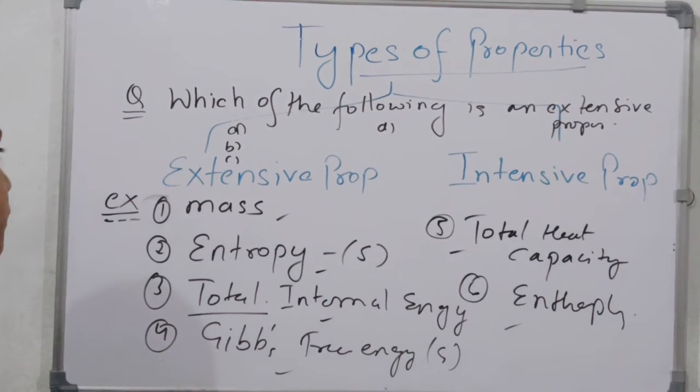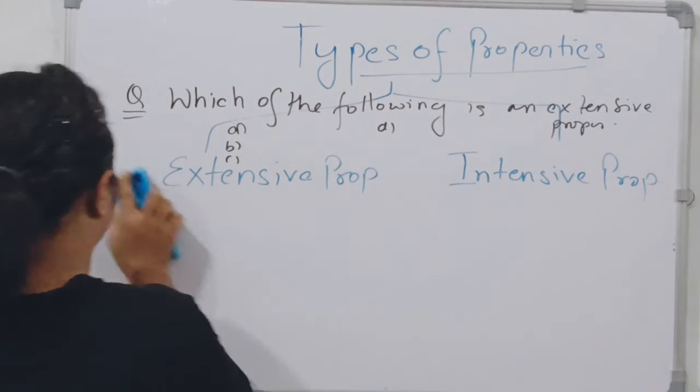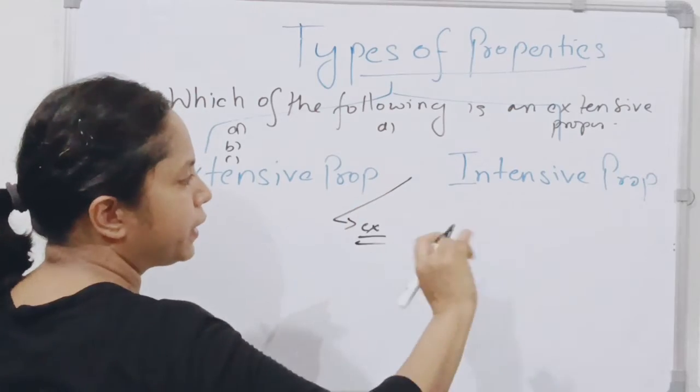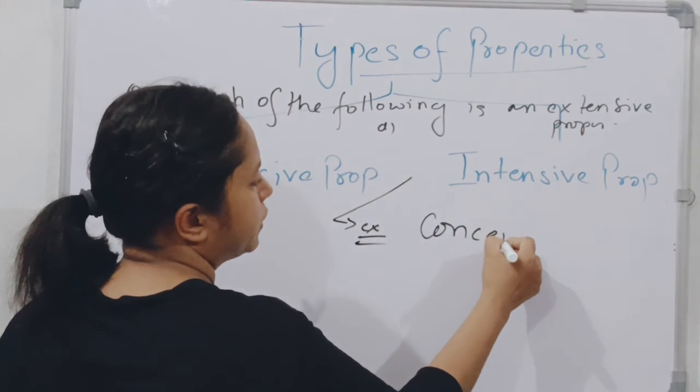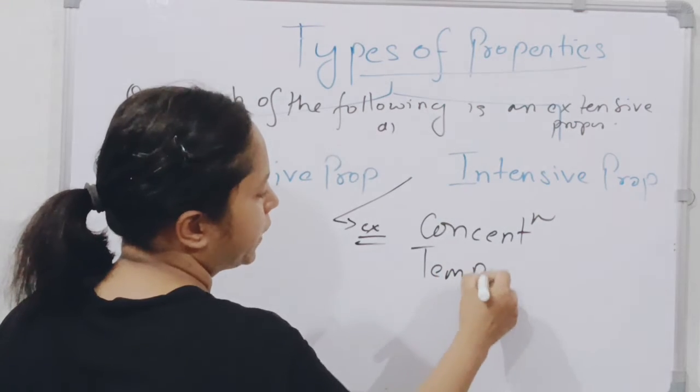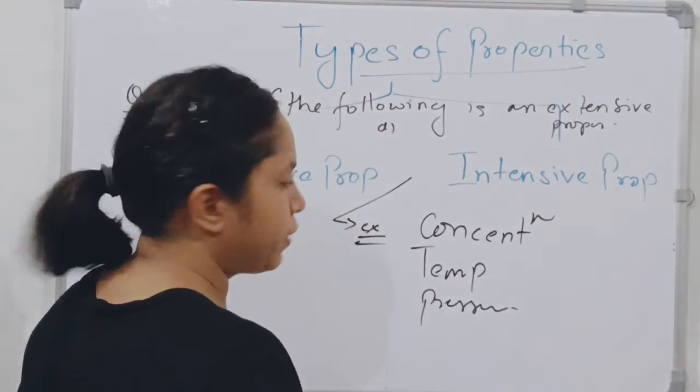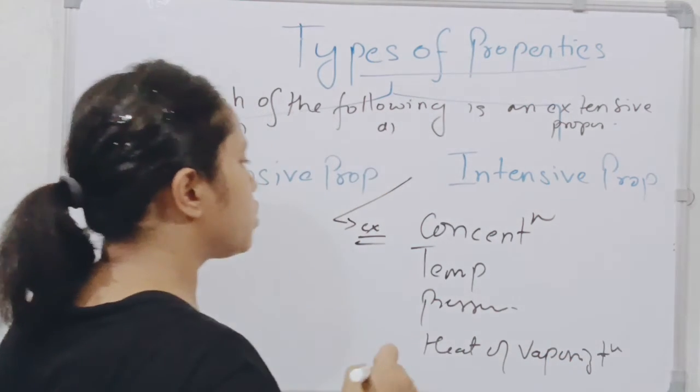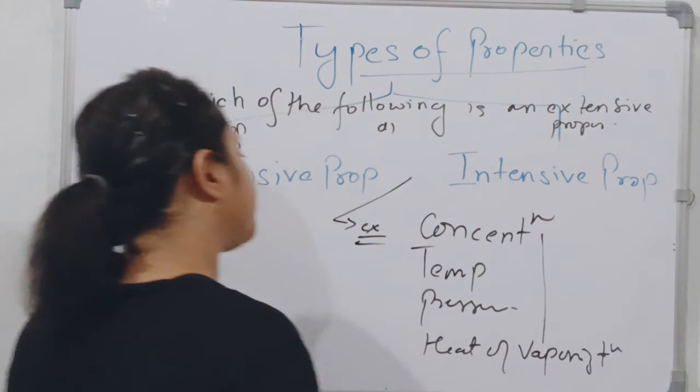Now intensive property examples. Intensive properties - first we have done size dependent or mass dependent. Next is concentration, temperature, pressure, heat of vaporization, and molar specific heat. These are intensive property examples.